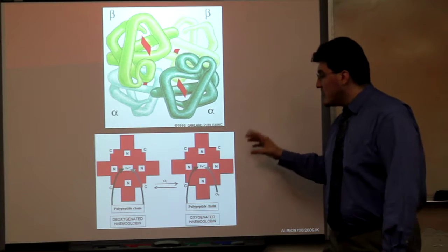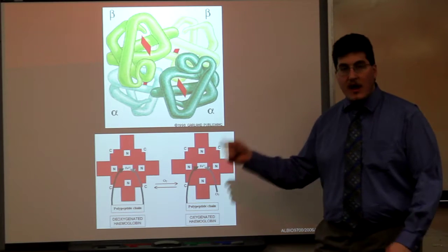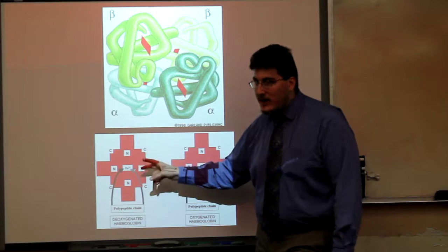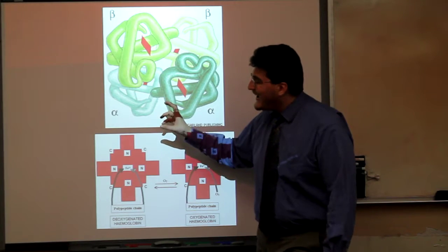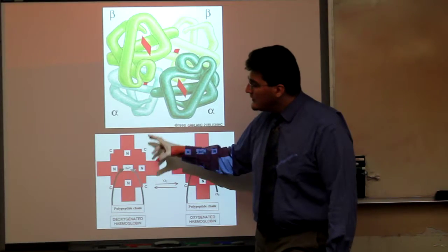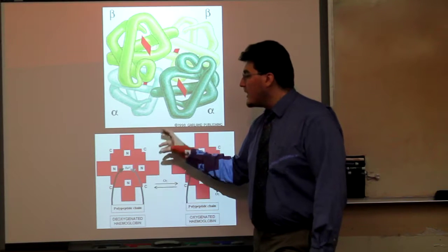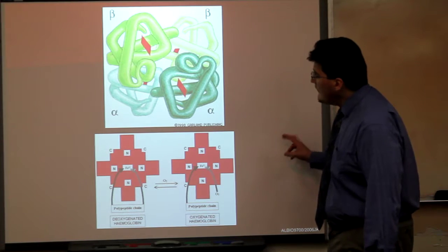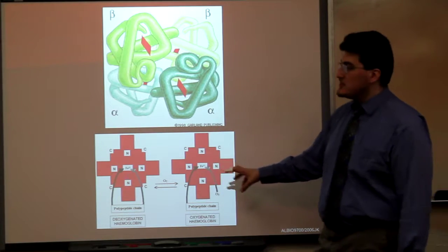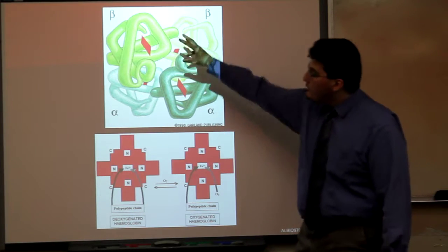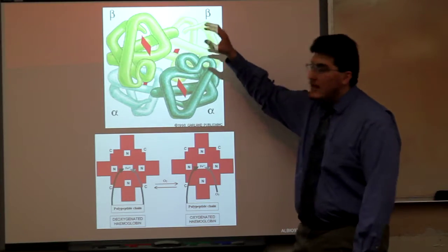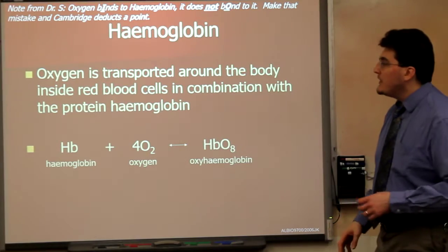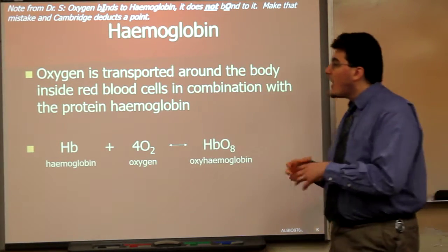Heme, which is a prosthetic group, not a polypeptide, is inorganic, which means that it has a non-carbon-based structure. This is a metal ion here, and this is what binds the oxygen in the blood. Because there are four heme groups, it's able to bind four oxygen molecules. Hemoglobin and four oxygen molecules will get us oxyhemoglobin.